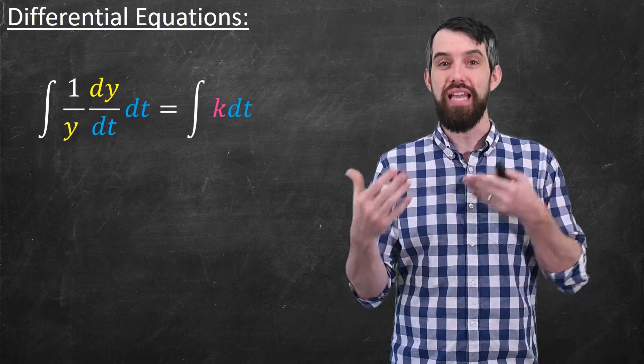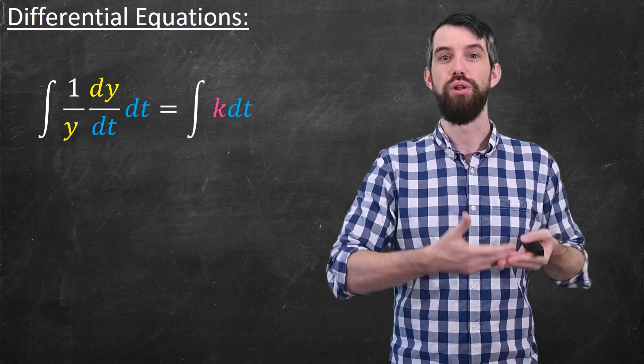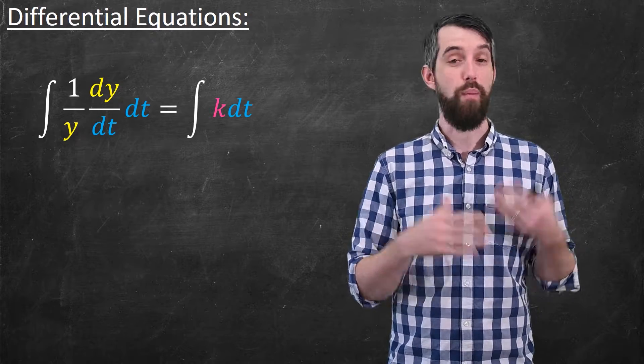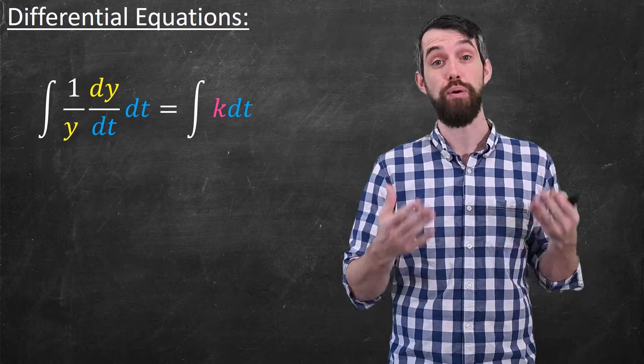Then I'm going to go along and I'm going to take the integral with respect to t of both sides. So the integral of 1 over y, y prime dt is equal to the integral of k dt. I'm always allowed to do the same thing to both sides of an equation, and therefore I'm going to integrate both sides of this equation.